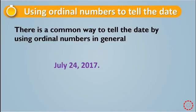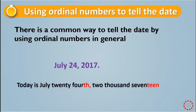How can we read and tell it in a correct way? We have to say: today is July 24th, 2017. Instead of saying twenty-four, we say twenty-fourth.